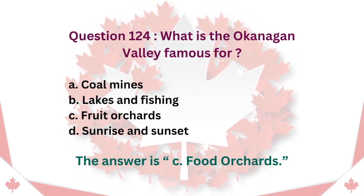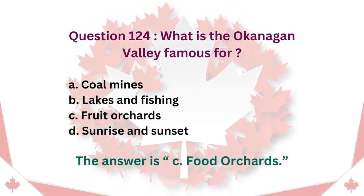Question 124: What is the Okanagan Valley famous for? A. Coal mines. B. Lakes and fishing. C. Fruit orchards. D. Sunrise and sunset. The answer is C. Fruit orchards.